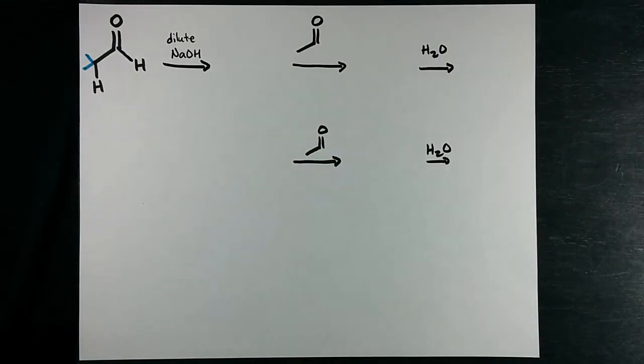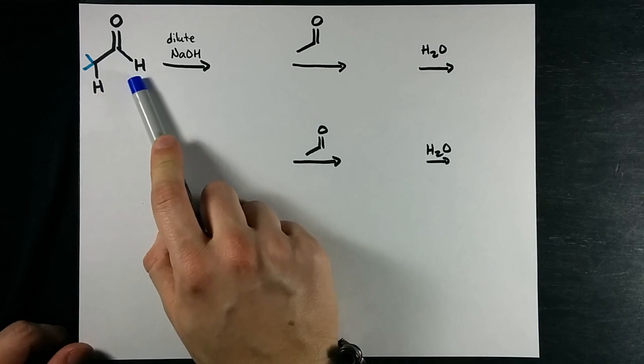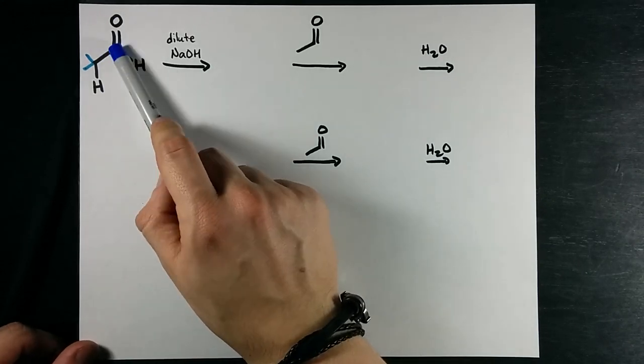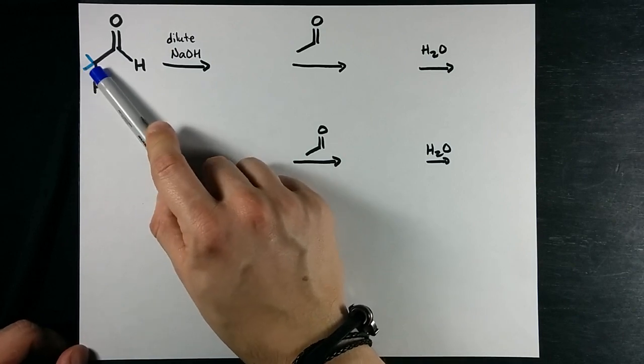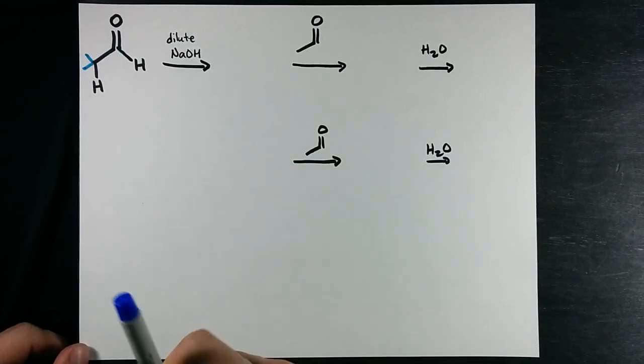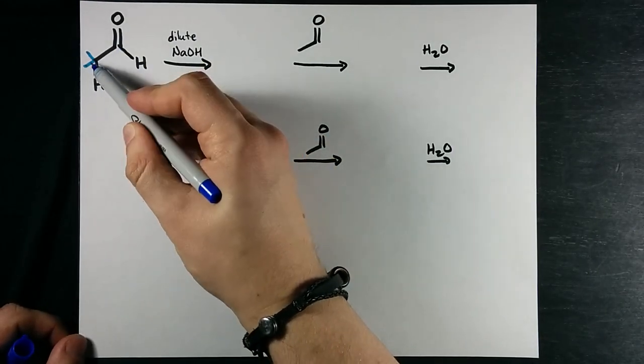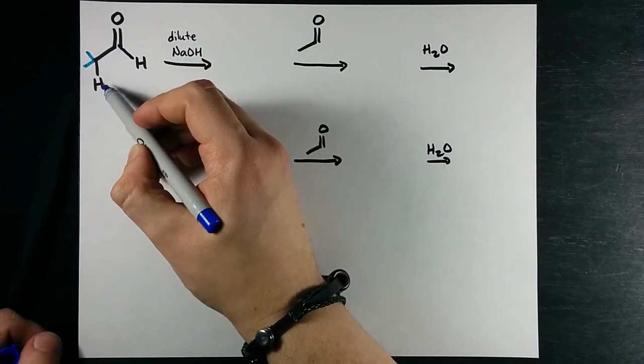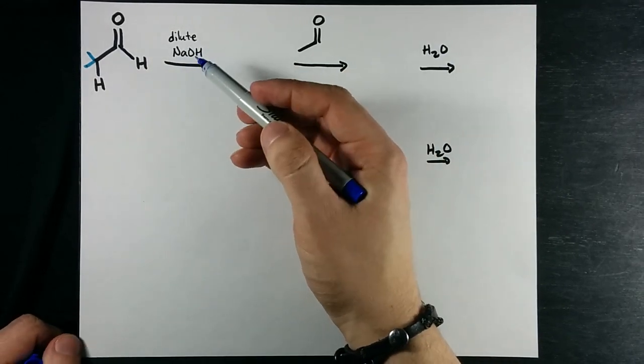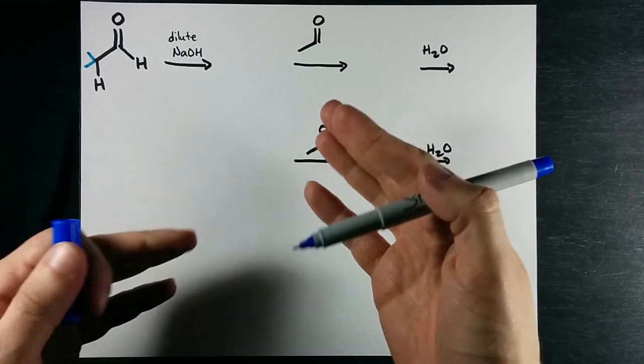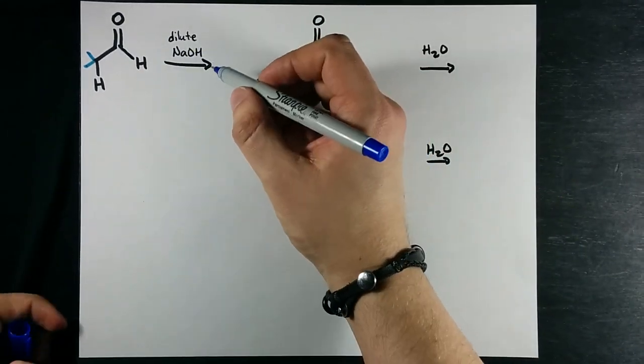Let me show you how aldol condensations work. Here we have an aldehyde, that's a CHO group at the end of the molecule, and we have a hydrogen on the carbon next to the carbon that has the double bonded oxygen on it. That hydrogen is called an alpha proton and it's easily removed even by weak bases like NaOH, and when I say a weak base, I mean comparatively to other organic bases like LDA.